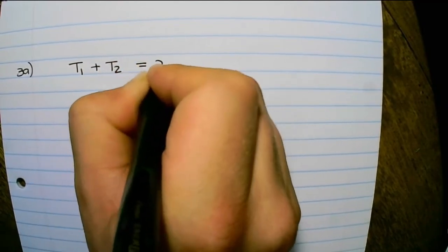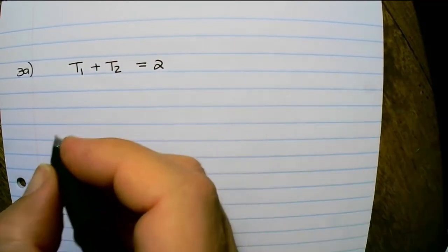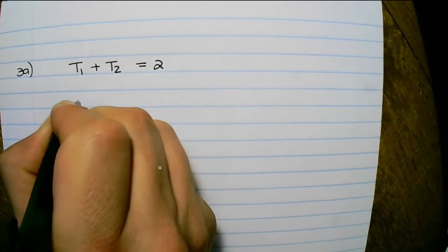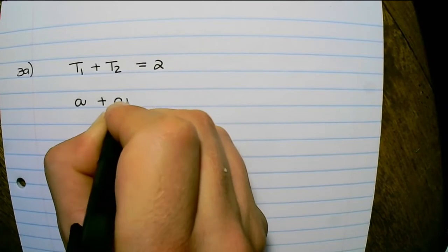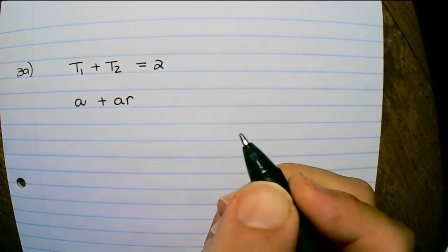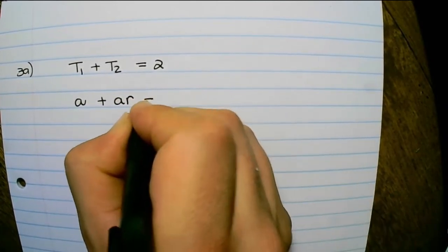So we are given T1 + T2 = 2. And because it's geometric, term one is a, term two is a times r, and that is equal to two.